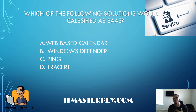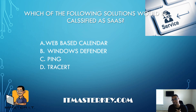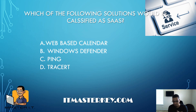Which of the following solutions will be classified as SaaS — software as a service? That's another acronym. Whenever you see acronyms, look them up, because a lot of times the acronym will give you the answer. Easy — a web-based calendar would be an example of software as a service.